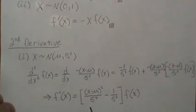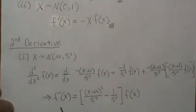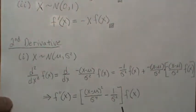Now this simplifies, you can factor out the density and then combine and we get this. So the second derivative of a normal density can be written in this form.